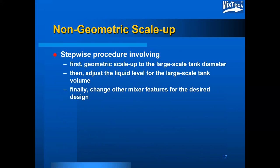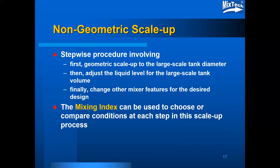For non-geometric scale-up, I typically take a stepwise approach, starting first with geometrically similar scale-up from the small scale tank diameter to the large scale tank diameter. This doesn't necessarily get the right liquid level or volume, but that adjustment can be made once the initial geometric scale-up is done. Once you have the large scale volume and scale-up accomplished based on the small scale information, other mixer features can be adjusted — such as number of impellers, type of impellers, and other characteristics — to get the desired design. The mixing index can be used for non-geometric scale-up to choose or compare conditions at each step in the scale-up process.